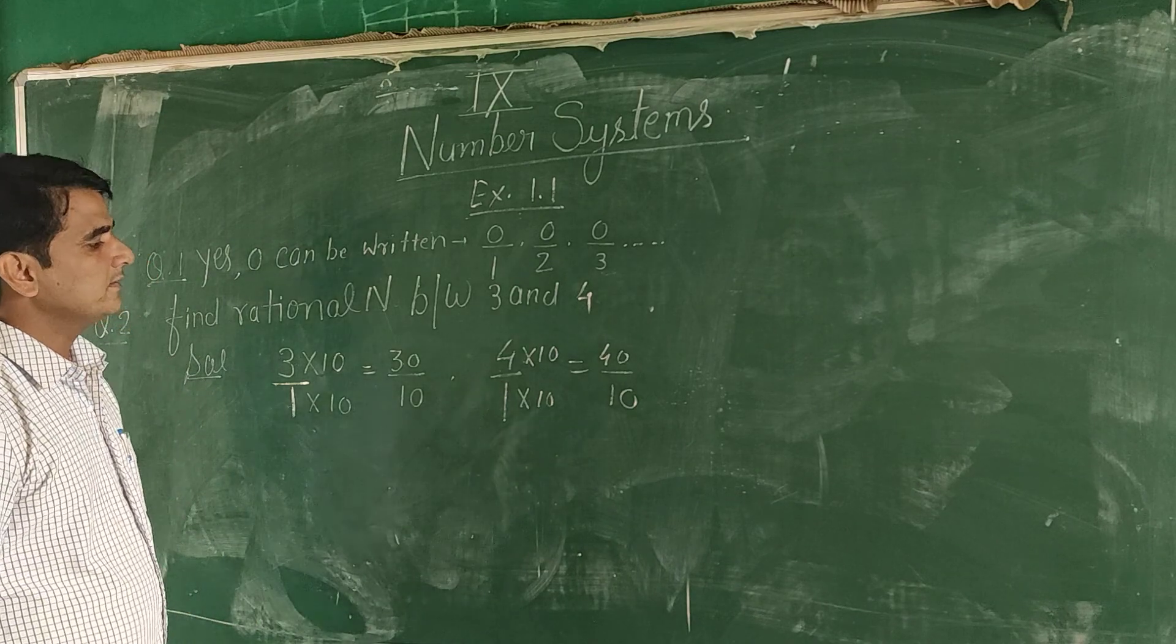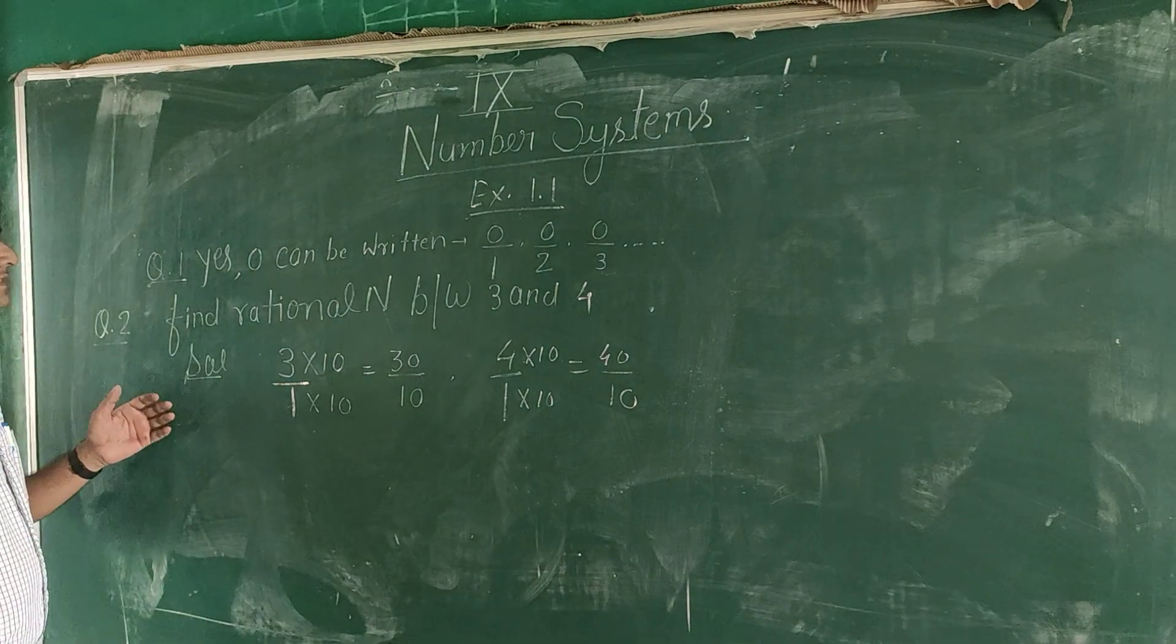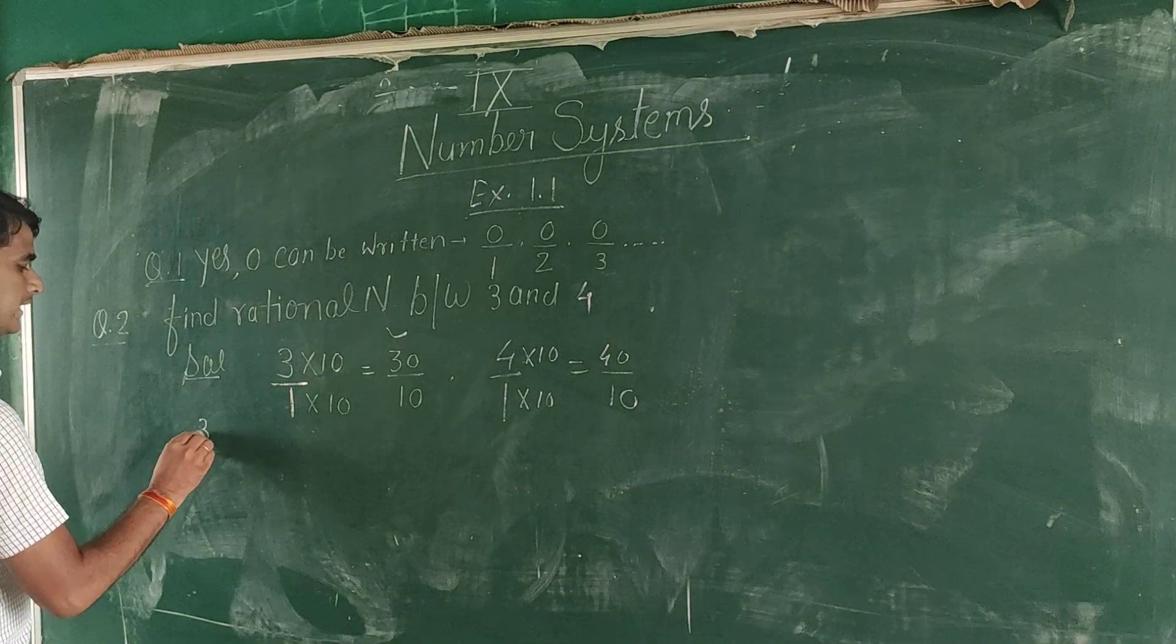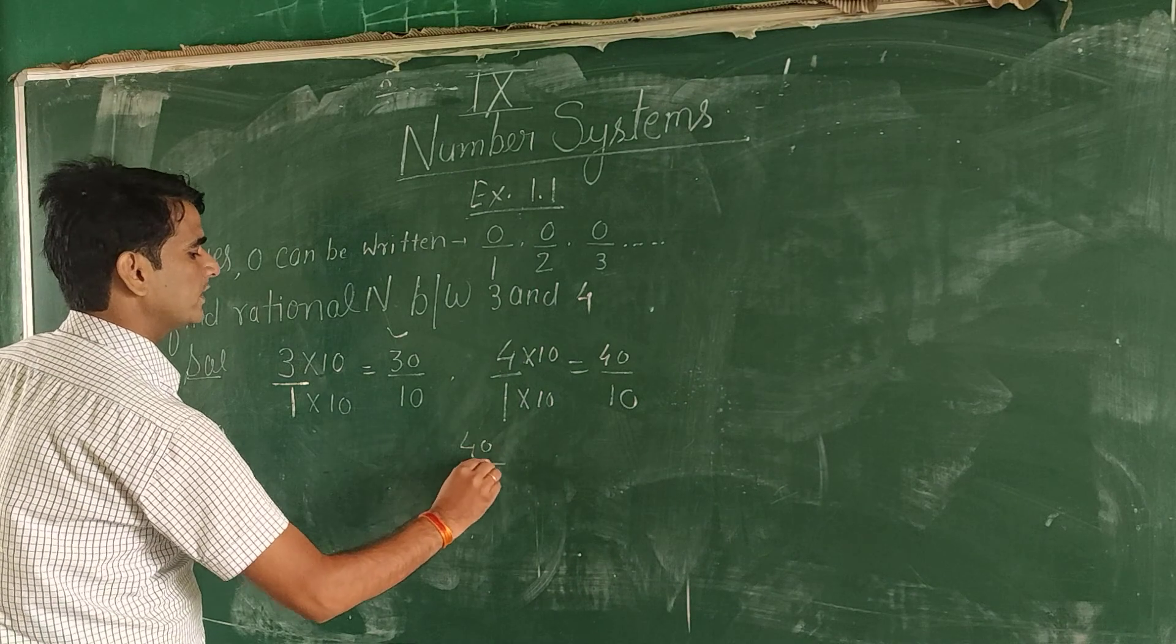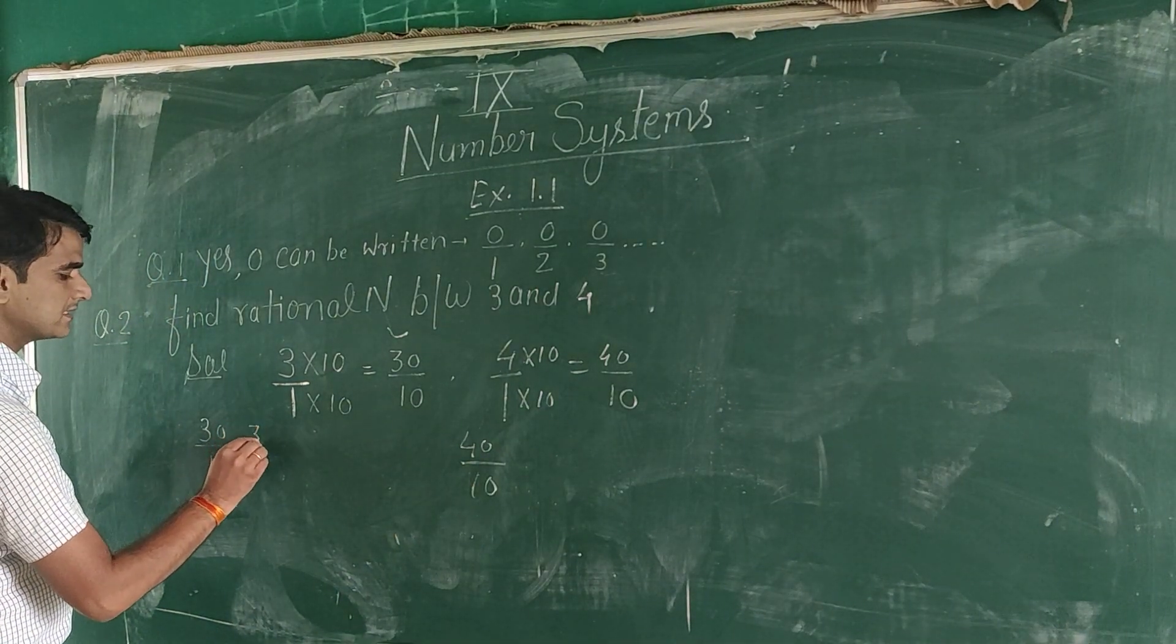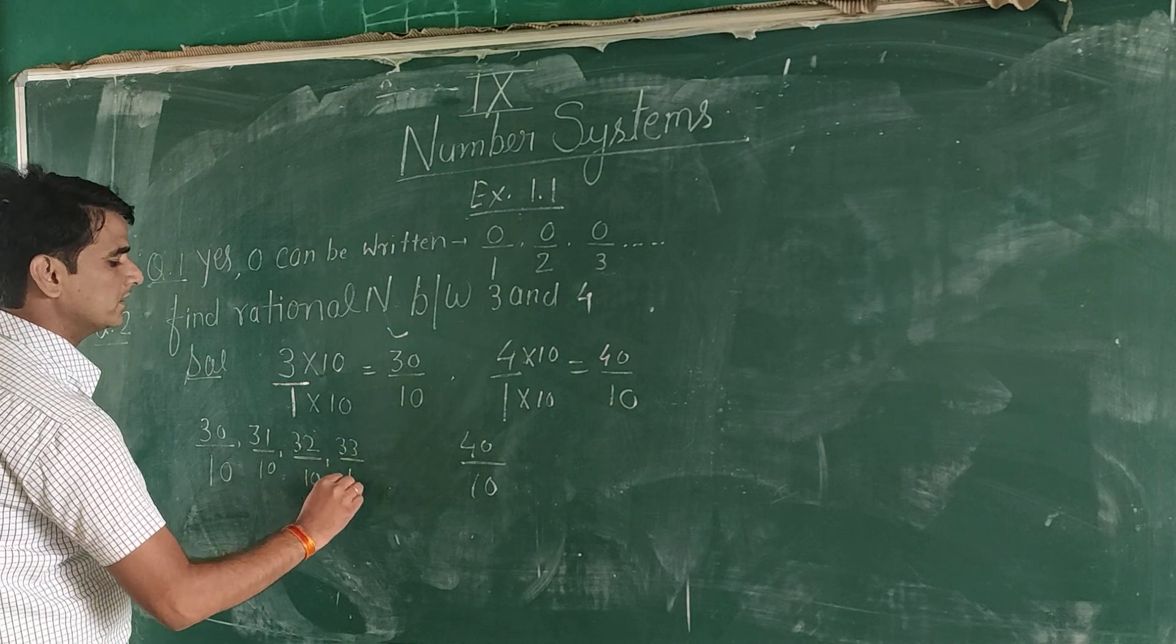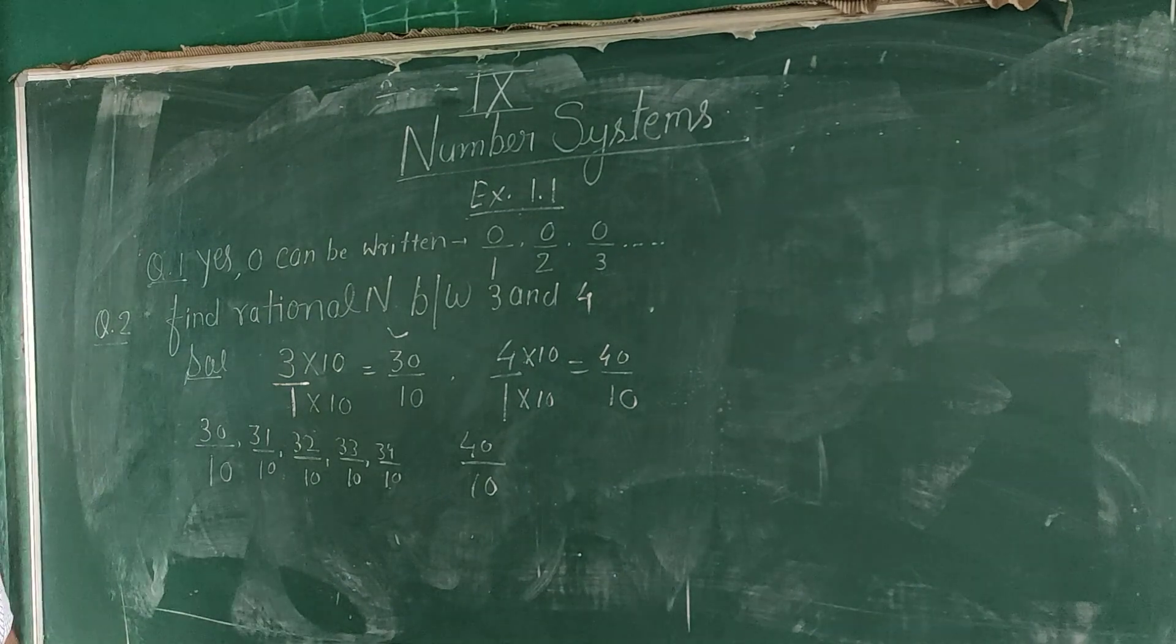4 upon 1, multiply by 10. The value outside, 40 upon 10. Here the denominator is same, here it is 10. So rational numbers between 3 and 4 are: 31 upon 10, 32 upon 10, 33 upon 10, 34 upon 10, 35 upon 10, 36 upon 10.